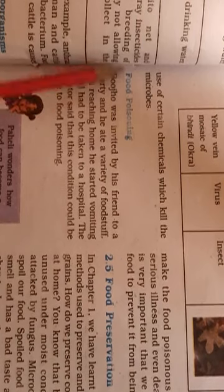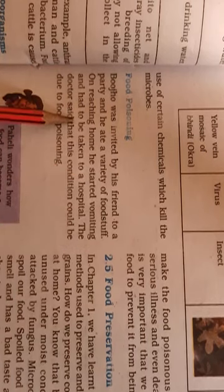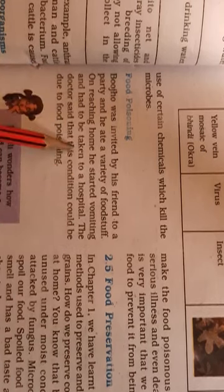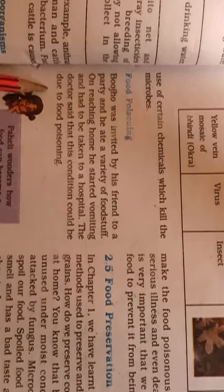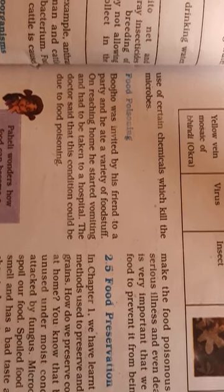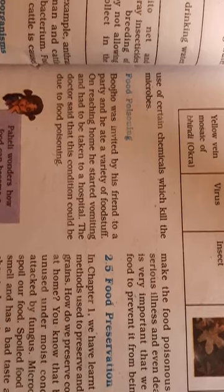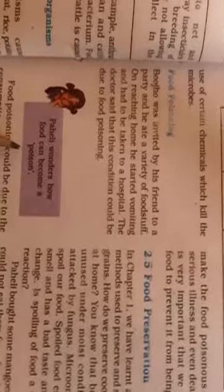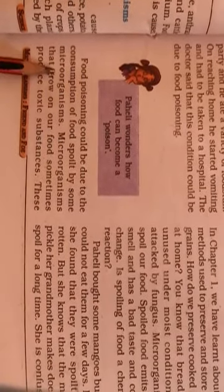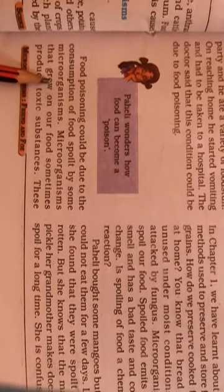Next is food poisoning. For example, Bujo was invited by his friends to a party and he ate a variety of food. On reaching home, he started vomiting and had to be taken to hospital. The doctor said the condition could be due to food poisoning. So, what is food poisoning?